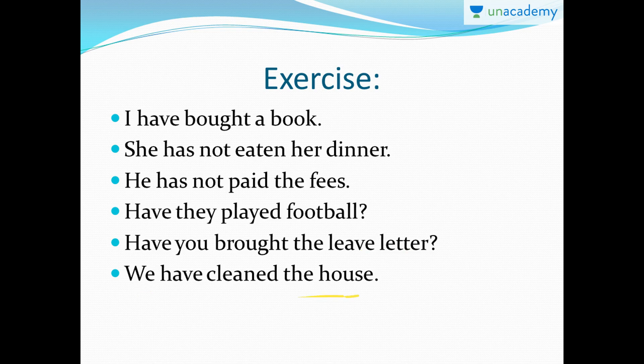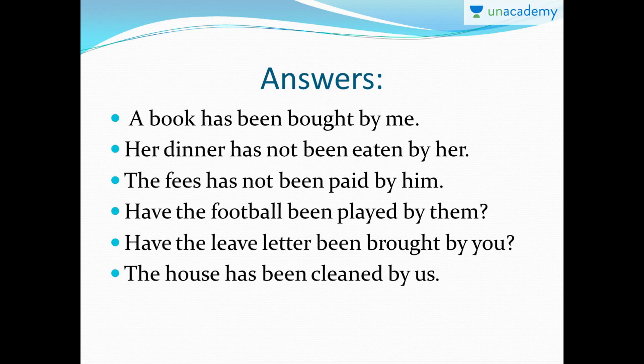Last one: 'We have cleaned the house.' Subject 'we,' object 'house.' Passive voice: 'The house has been cleaned by us' — 'has' because 'house' is singular. 'We' changes to 'us.' Pay attention to whether you use 'has' or 'have' depending on the subject of the passive sentence. Here's a slide with all the answers — if you guys have any doubts, please let me know in the comment section.